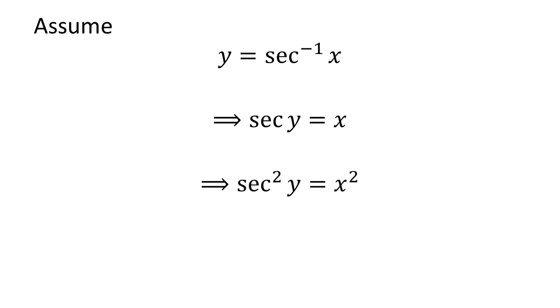Squaring both sides doesn't change the equation. So, we get square of secant of y is equal to square of x.